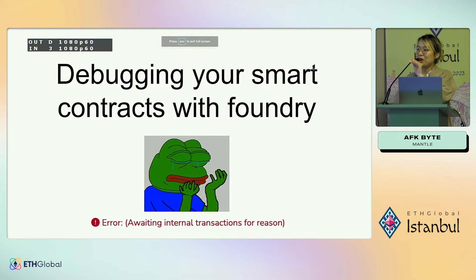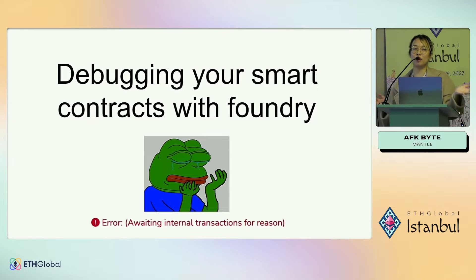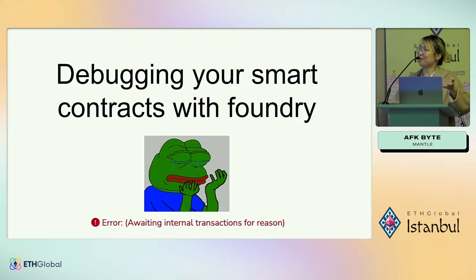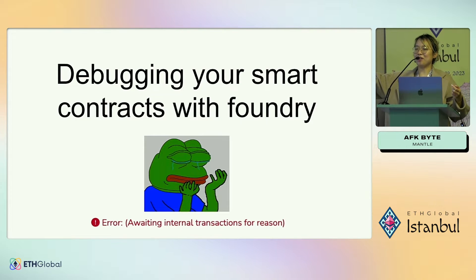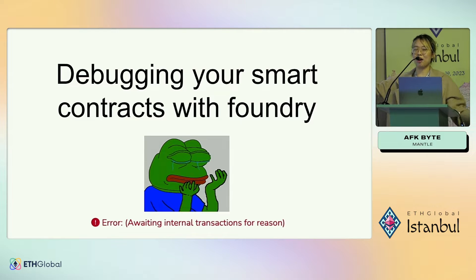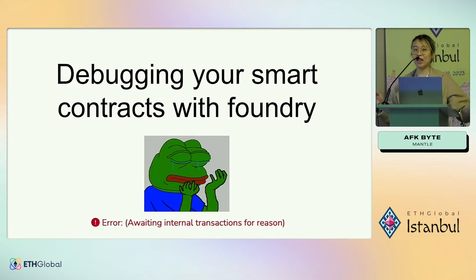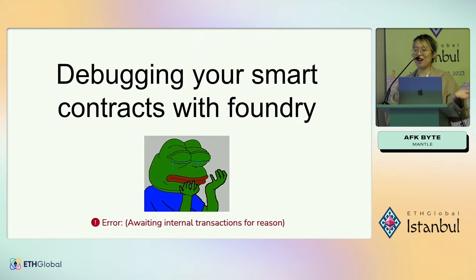We're going through debugging your smart contracts with Foundry. We'll be walking through some of the Cast utilities and the debugger. This is something you'll see pretty often on some block explorers, especially ones like BlockScout, where sometimes the internal transactions aren't being parsed correctly. You'll just see that your contract is failing or a transaction is failing when you're calling a contract, and it's just not going to tell you why.